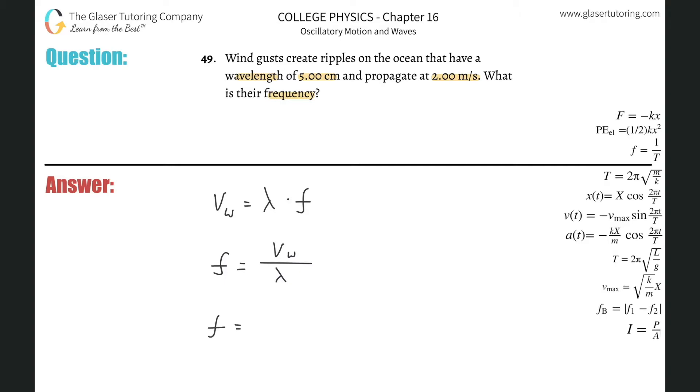So the speed here, they told us in meters per second, it was 2. Divided by then the wavelength, but they told us 5 centimeters, but you know we need that in meters, so just divide that by 100 or 0.05.